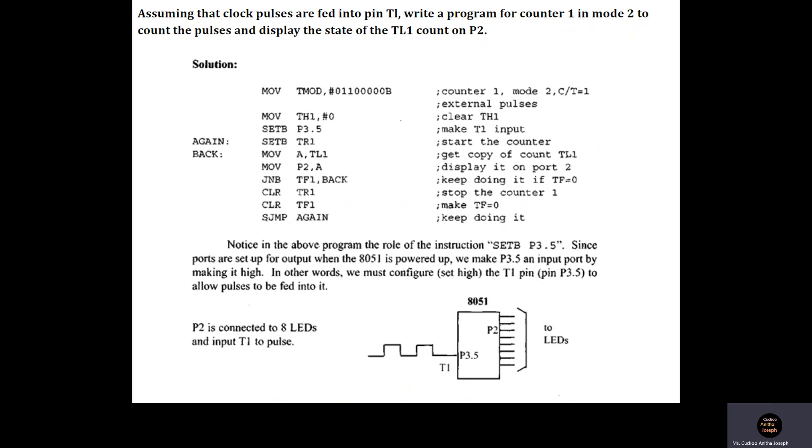Instead of SJMP AGAIN, we can display a message once we have learned the sixth module, where you will learn how to display messages using an LCD display. But since we are in the fifth module, we will just repeat those steps. That's why it is written SJMP AGAIN.